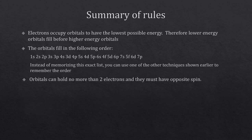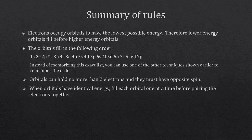To summarize the rules: orbitals can hold no more than two electrons and they must have opposite spin — no two ups or two downs. When orbitals have identical energy, we fill each orbital one at a time before pairing them together. For example, the 3d orbital has five boxes, so the first five electrons will each be on their own before you start pairing.